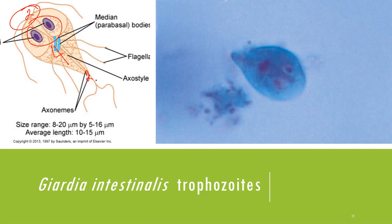To summarize the flagella: two anterior, four median (two pairs), and two posterior — totaling eight flagella. That is how we describe the trophozoite of Giardia intestinalis, not simply as 'old man's face.' The trophozoite is tear-drop shaped with a falling-leaf motility, bilaterally symmetrical, and there is also a sucking disc located in the body. The size is 8–20 by 5–16 micrometers.